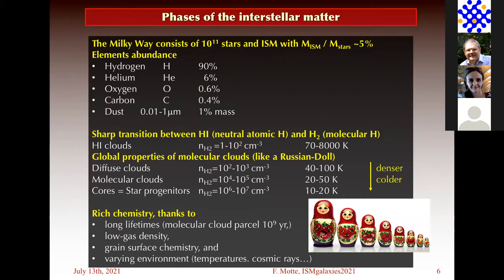Clouds are part of the interstellar matter and there are different phases. The Milky Way consists of about 10^11 stars. The mass in these stars is a lot compared to the ISM — only 5% for the ISM. So we are dealing with a minor portion of the visible mass of the Milky Way. We use tracers which are very minor: clouds are mostly hydrogen, but for molecular clouds we use CO, which is around 1% of elemental abundance, and dust, the second main tracer.